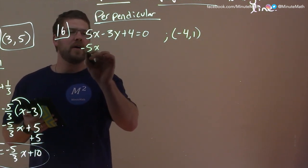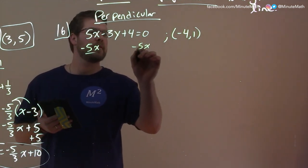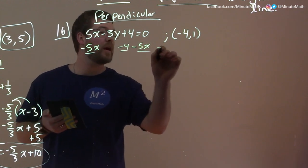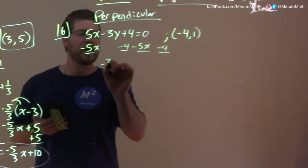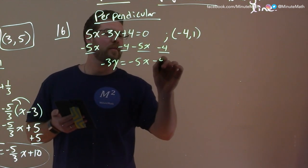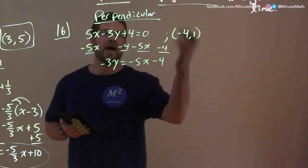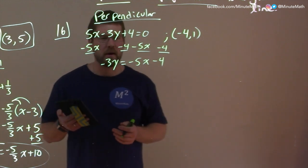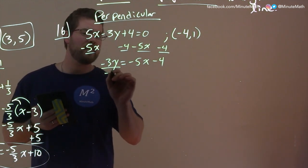We subtract a 5x to both sides. We can subtract a 4 to both sides. And we're left with a negative 3y here equals minus 5x minus 4. And I guess you could have added a 3y to both sides, but that's okay.